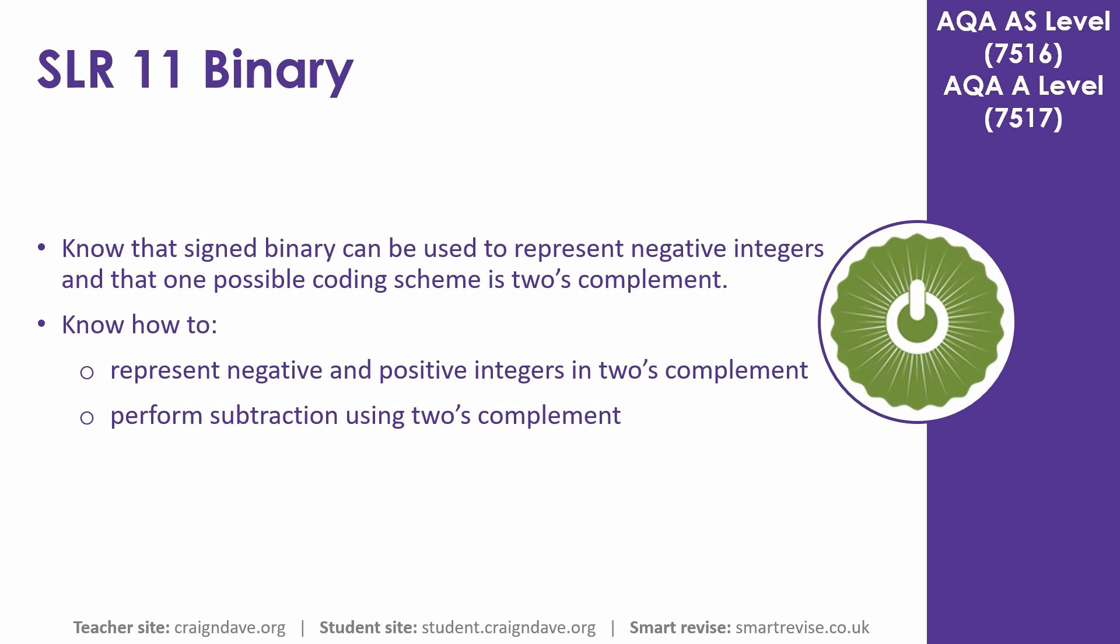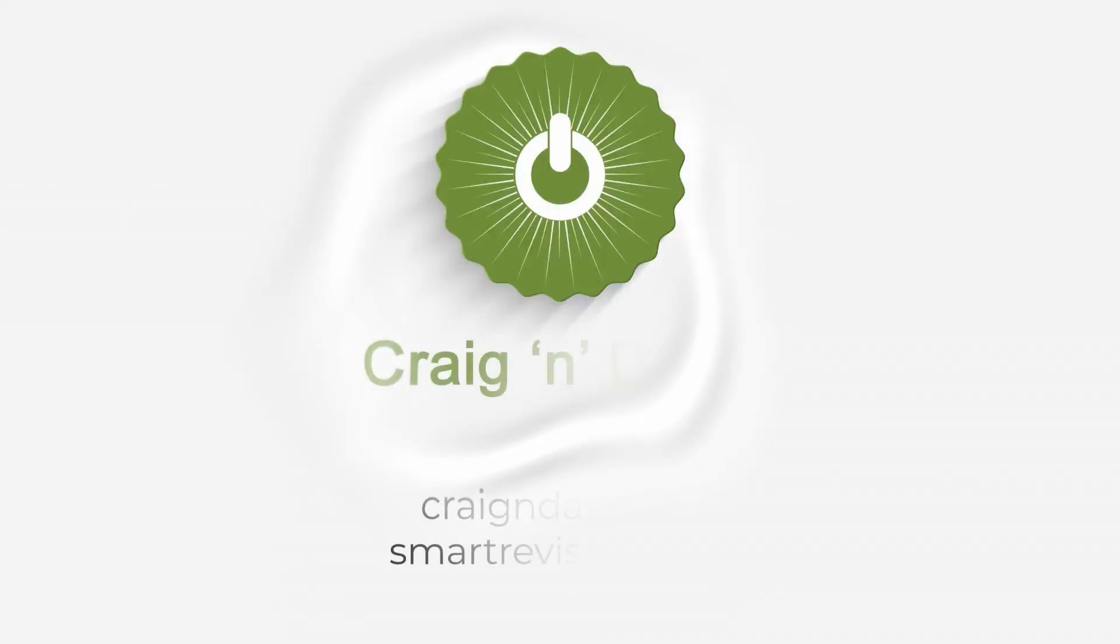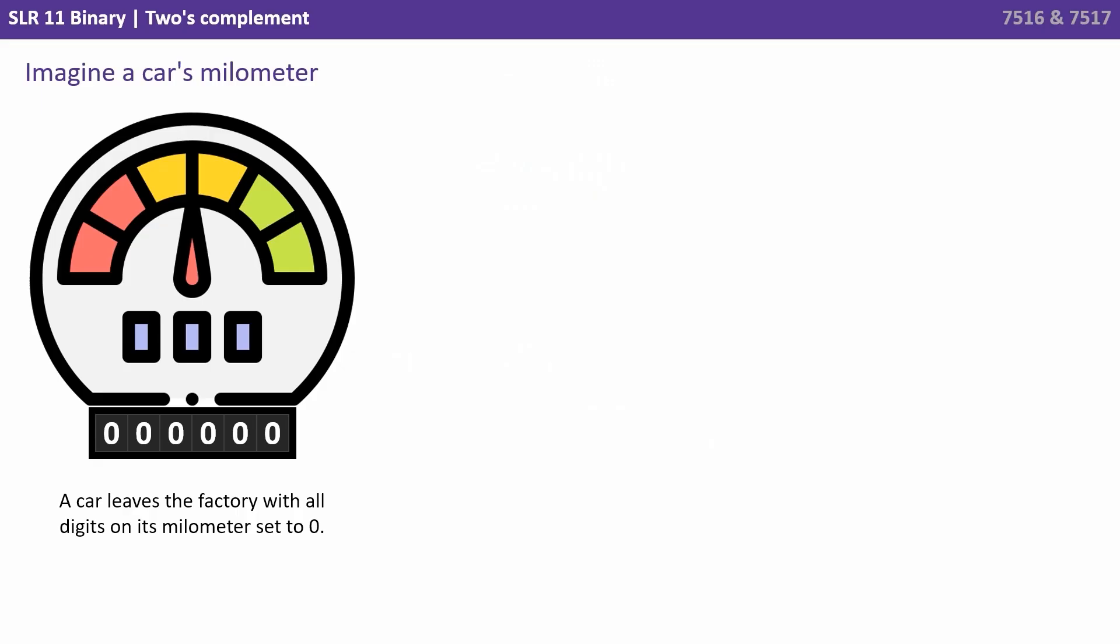In this video we look at the two's complement method of representing negative binary integers. Imagine a car's milometer. A car leaves the factory with all digits on its milometer set to zero.